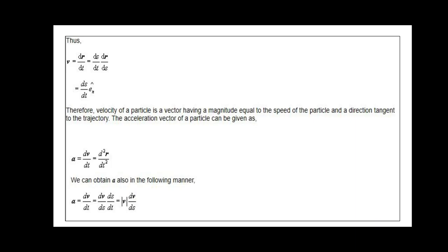Next, acceleration. If the velocity of the particle changes by Δv in the time interval Δt, then the average acceleration is given by Δv / Δt. To find the instantaneous acceleration at a given instant, we apply the limit as Δt tends to 0 for the ratio Δv / Δt. By that, we get acceleration as dv/dt, and we can also express it in terms of the position vector as d²r/dt².